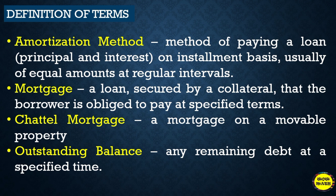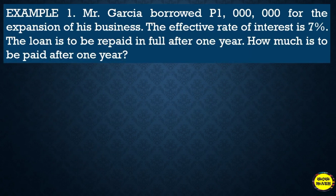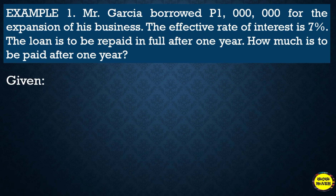For example, Mr. Garcia borrows one million for the expansion of his business. The effective rate of interest is seven percent. The loan is to be repaid in full after one year. So how much is to be paid after one year? First, let us identify all the given values. One million is the principal amount, and seven percent is the interest rate.